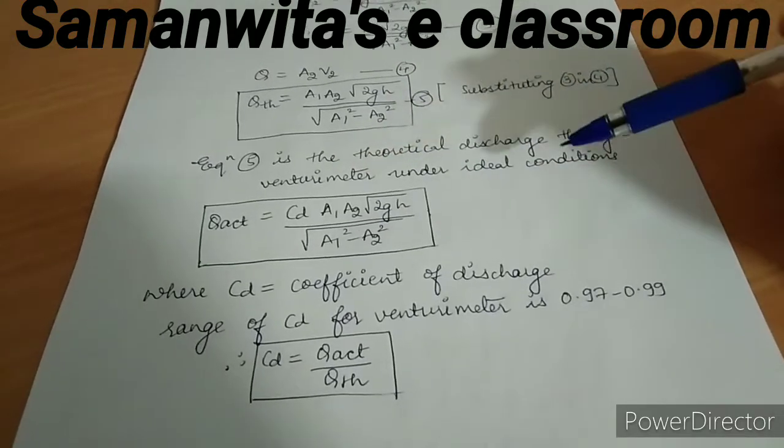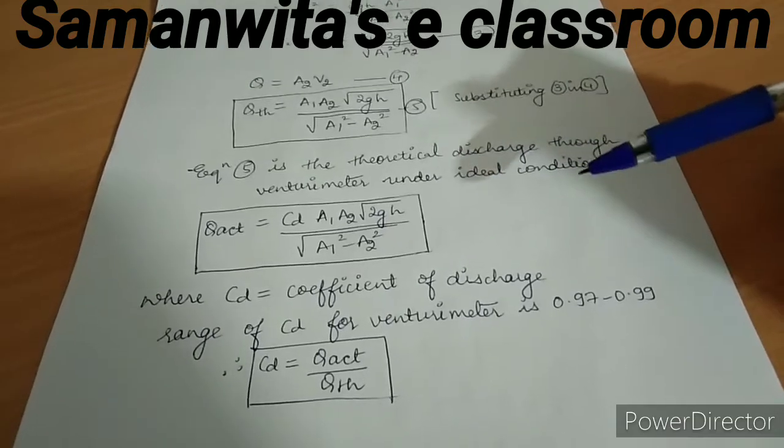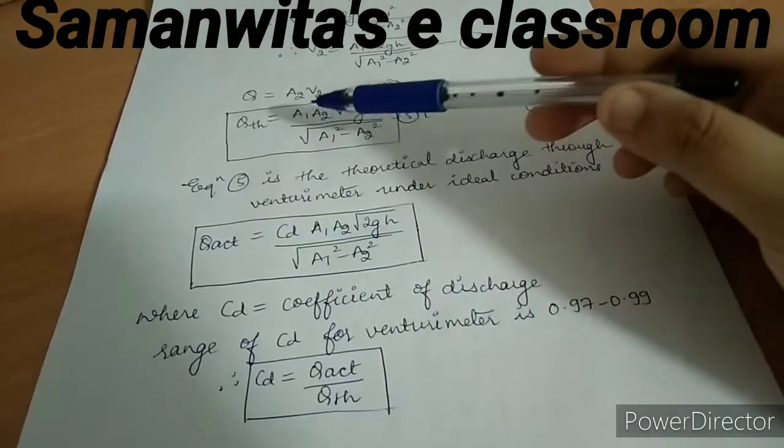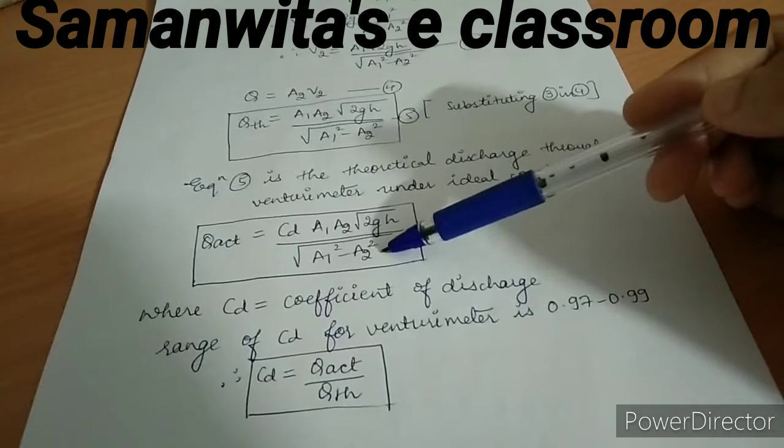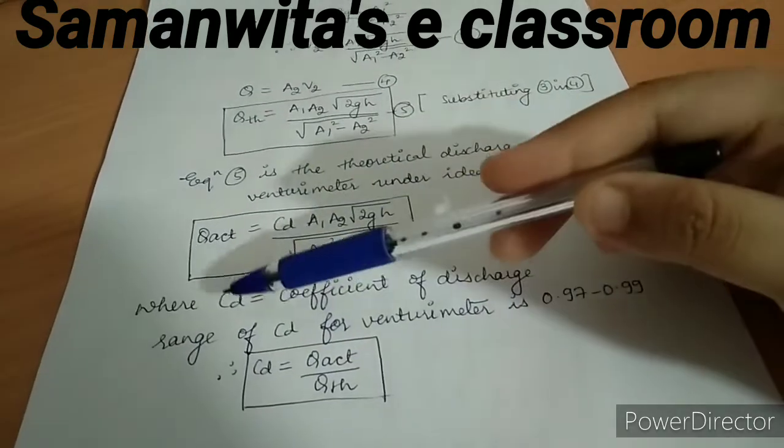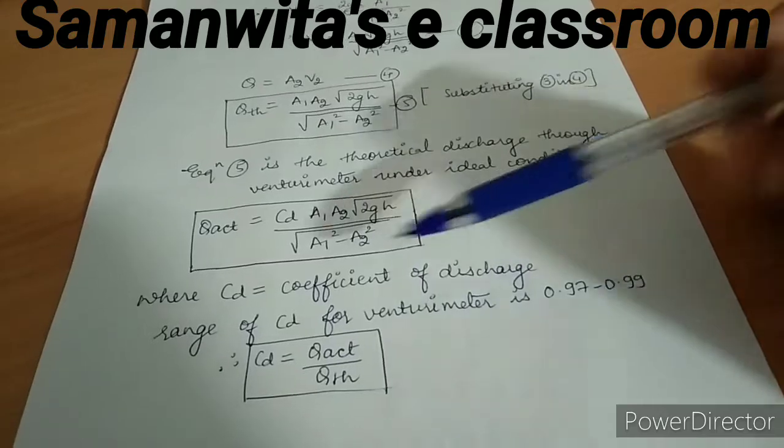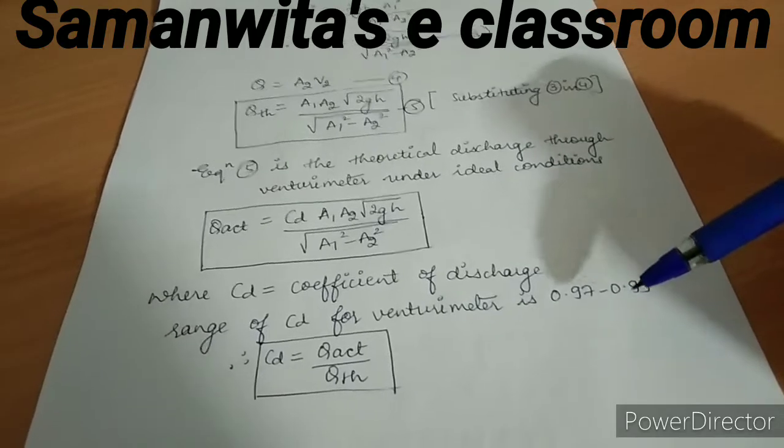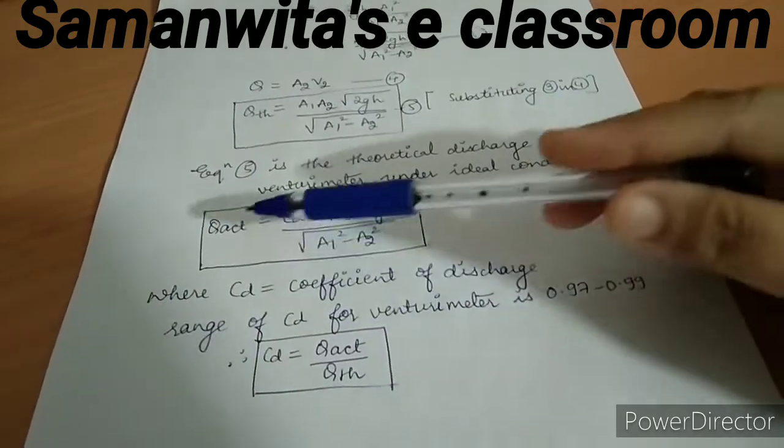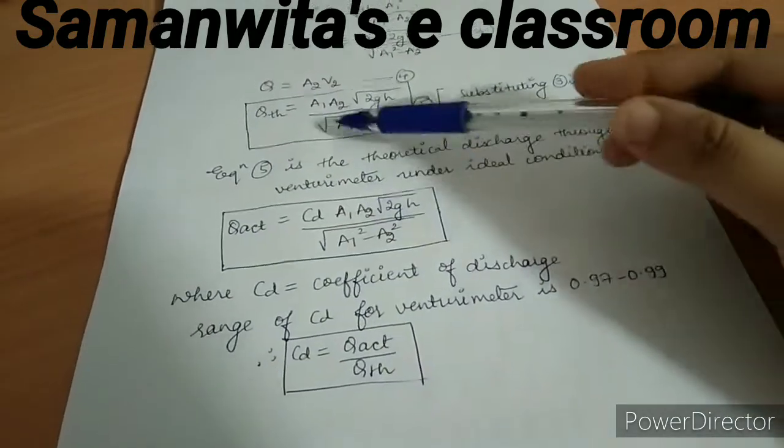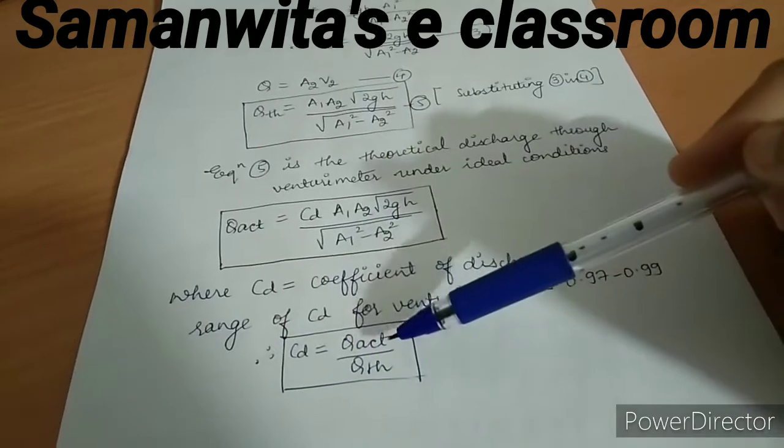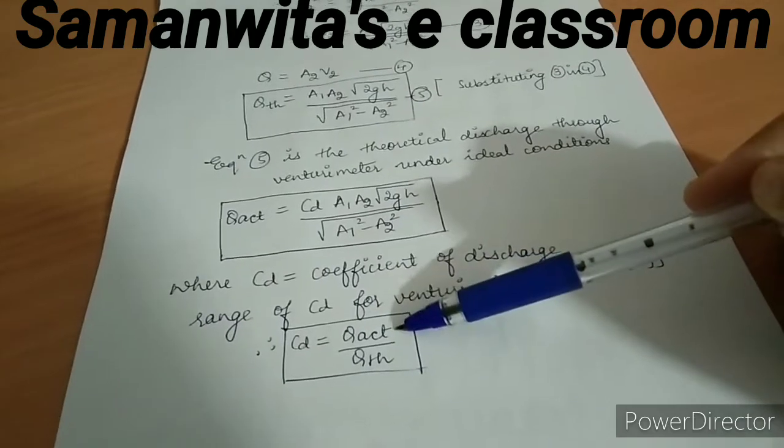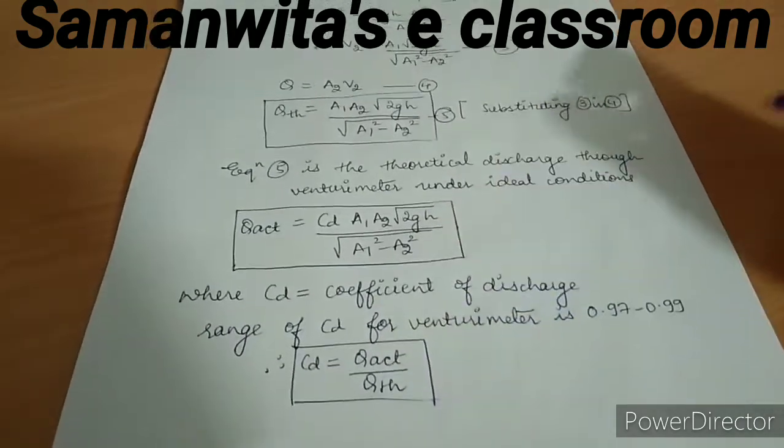But in real conditions you will always find some losses because of friction, so I can say that Q actual = Cd × A1A2√(2gh)/√(A1² - A2²), where Cd is called the coefficient of discharge. The range of Cd for venturimeter is generally 0.97 to 0.99. So the Cd can be calculated over here as Q actual divided by this term, which is actually Q theoretical, so I can say Cd = Q actual/Q theoretical. This value will be less than 1 as you can see that Q actual is always less as compared to Q theoretical.